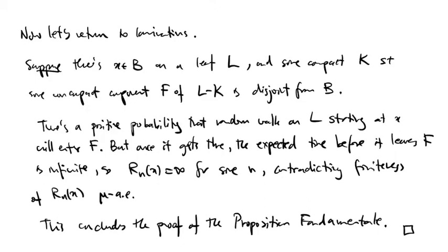It follows, for mu almost every point x in B, and for every end of the leaf L containing x, that the end must intersect the Borel set B somewhere. This concludes the proof of the proposition fundamental.